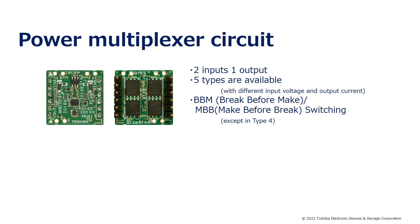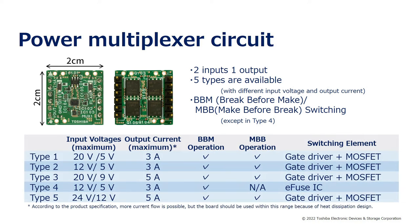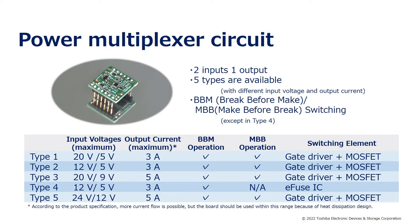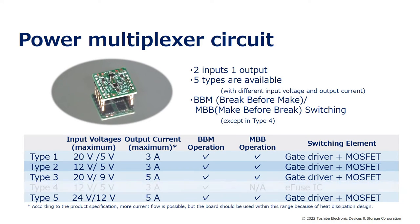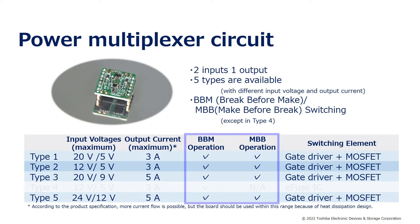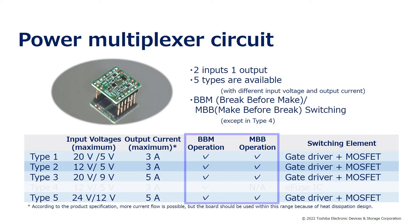Here we will introduce the reference design of a power multiplexer with two inputs and one output. The board size is 2 centimeters square, which makes it very compact. Five power multiplexer circuits with different input voltages and output currents are available. Out of these, four types with common drain compatible gate drivers can switch between BEBM and MBB operation.